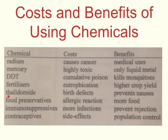The next example is thalidomide — a really tragic one. Thalidomide was a morning sickness medication used in the 1960s to prevent nausea in pregnant women. It did a great job at preventing morning sickness; however, the children whose mothers took thalidomide during pregnancy were born with birth defects. It was soon discovered that the birth defects were due to thalidomide, and the chemical was instantly taken off the market.